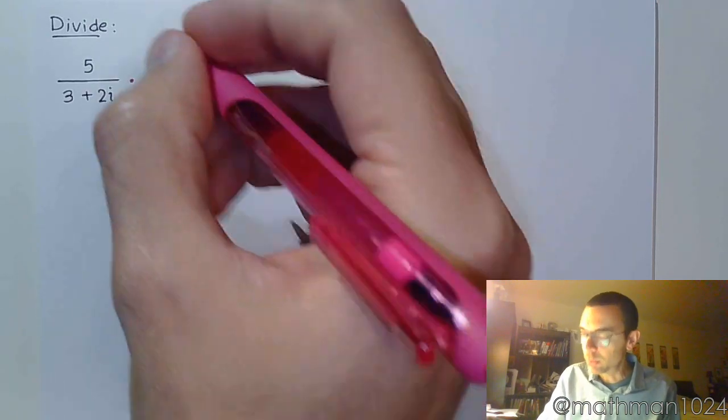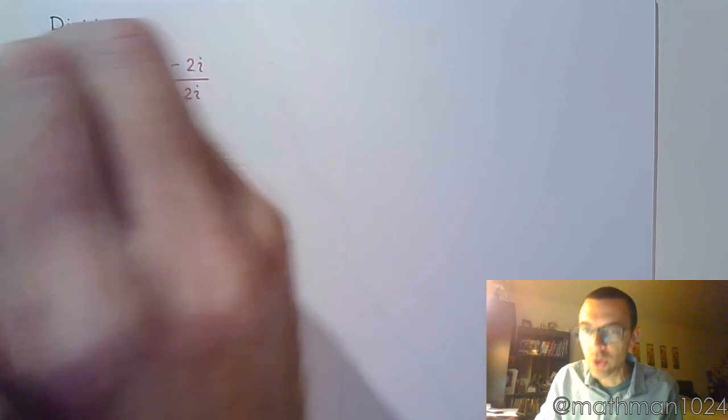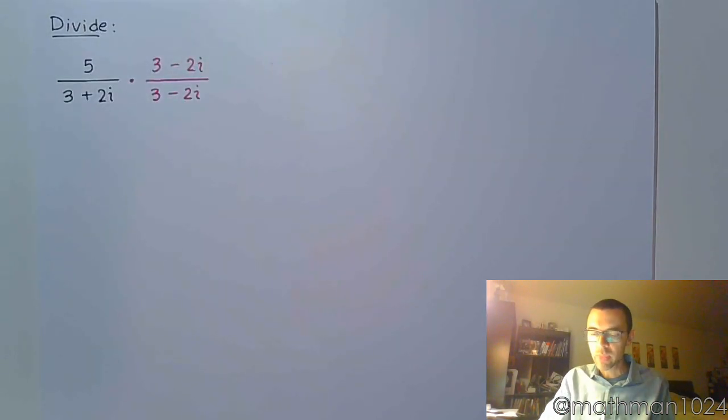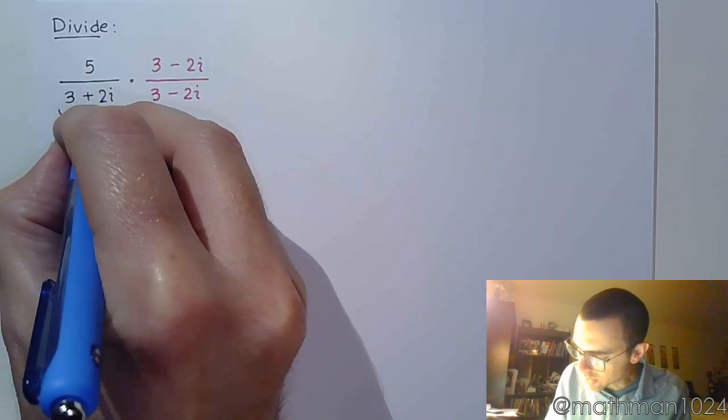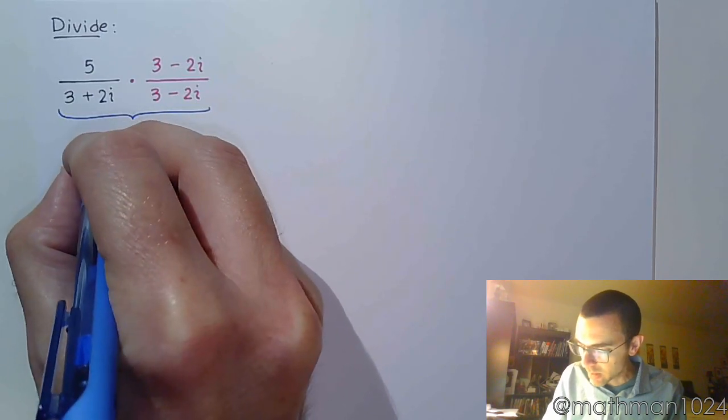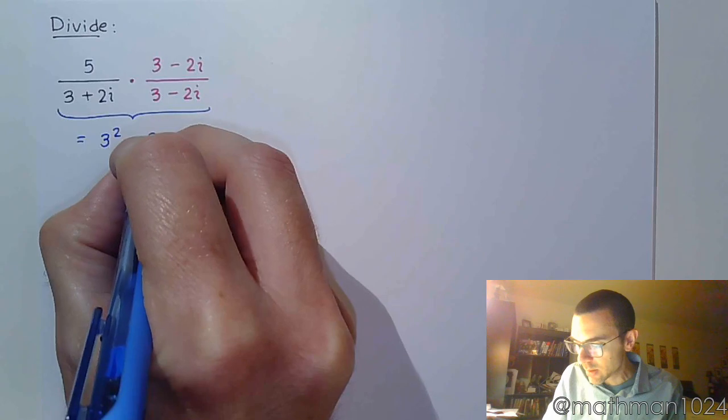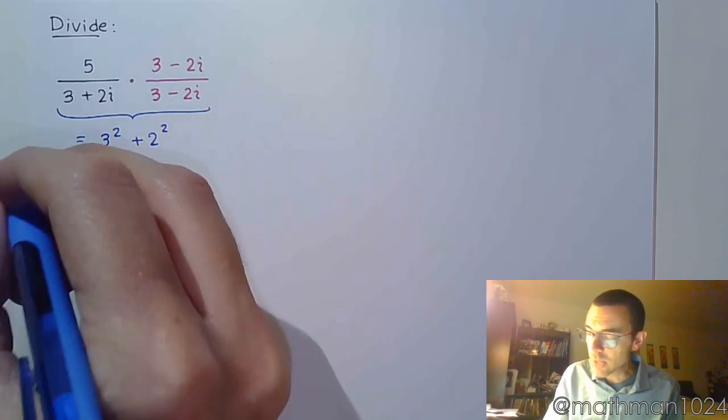Now, that changes the problem unless I also multiply in the numerator times 3 minus 2i. The whole purpose of this is to create the product of complex conjugates. As we saw in a previous video, the shortcut here is to have the sum of squares. So, 3 squared plus 2 squared.